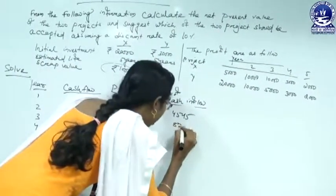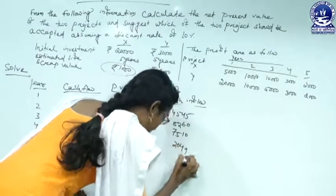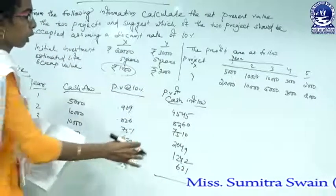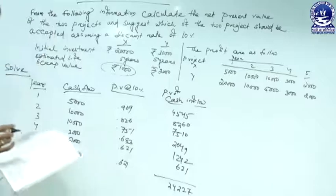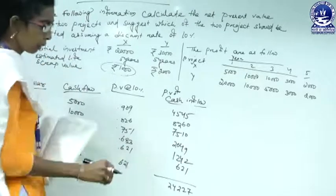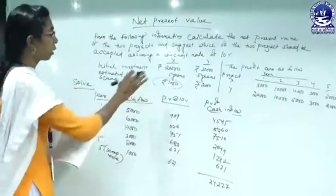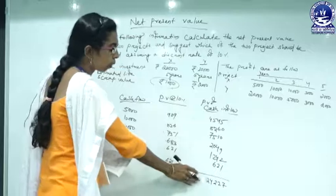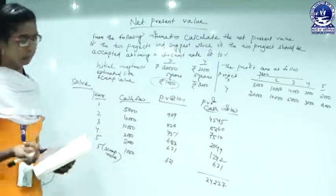Multiplying each cash inflow by its PV factor — for example, 5,000 × 0.909 = ₹4,545, and 10,000 × 0.826 = ₹8,260 — and summing all values gives a total present value of cash inflows of ₹24,227. This means that in today's terms, all future cash inflows from Project X amount to ₹24,227, while the investment was ₹20,000, so this project clearly generates a profit.